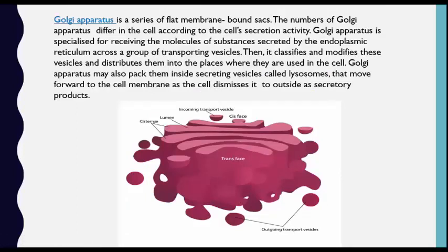The Golgi apparatus — it is called an apparatus because it is a series of flat membrane-bound sacs. The number of Golgi apparatus in a cell differs according to the cell's secretion activity.